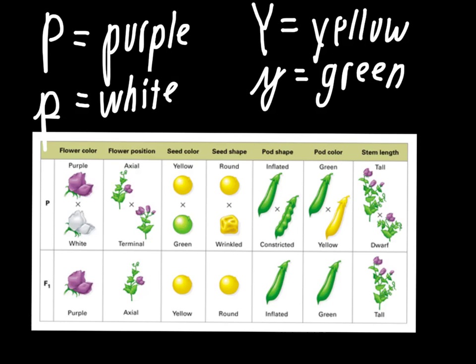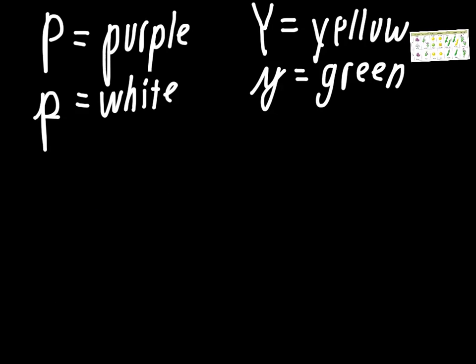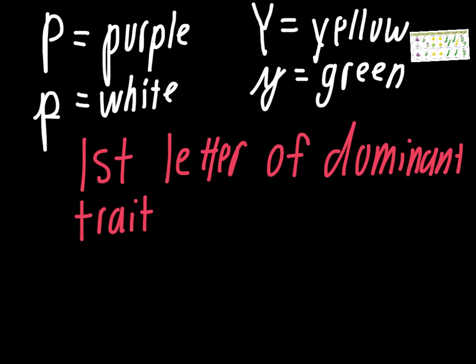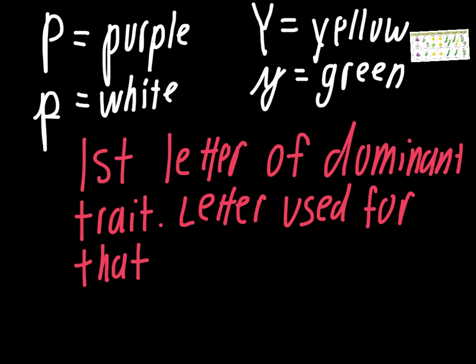So this is going to be the way that we're just representing these things with letters. The key to this, I'll write this one down for you. The first letter of the dominant trait, that becomes the letter used for that trait. For example, for this one, the trait is not purple or white. The trait is flower color. That's the gene. So we're using capital P to represent flower color. Capital P represents purple. Lowercase p represents white.